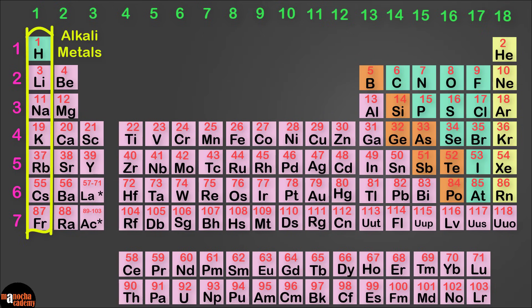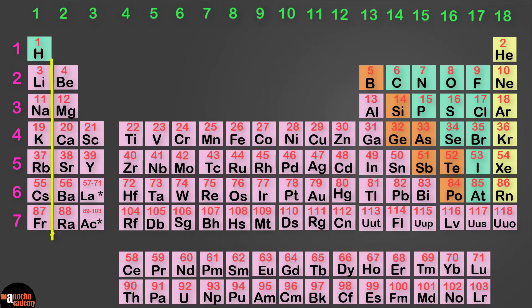The group 1 elements are called alkali metals because they form strong alkalis with water. The group 2 elements are called alkaline earth metals because they form weaker alkalis as compared to the previous group.